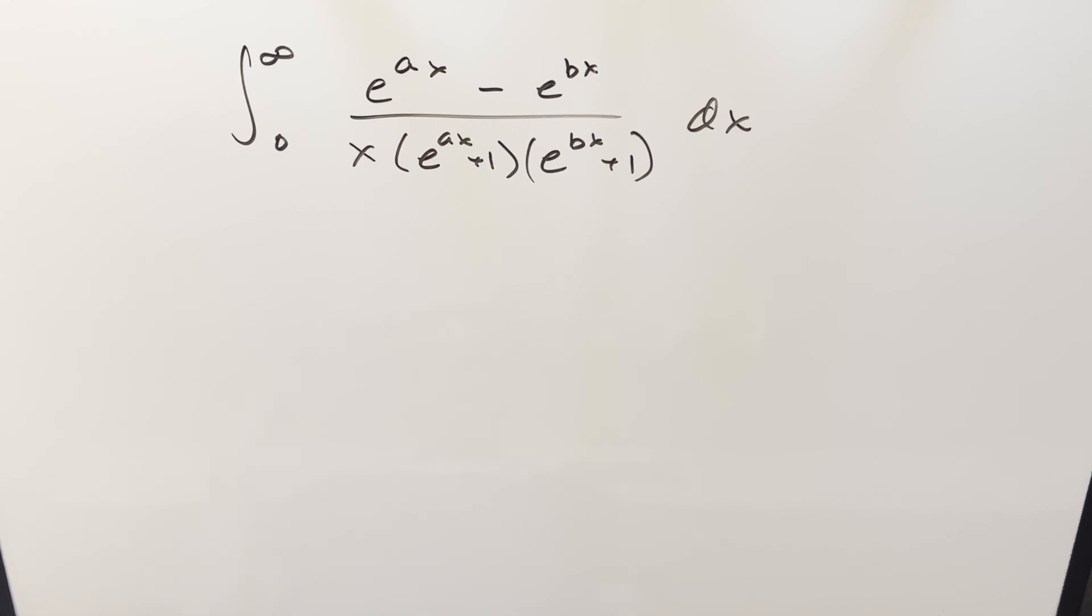Okay, we have here a pretty tricky looking integral. We've got the integral from zero to infinity, e to the ax minus e to the bx over x e to the ax plus one, e to the bx plus one dx.